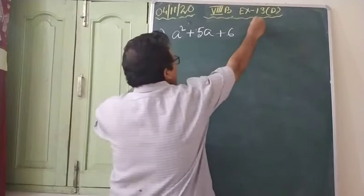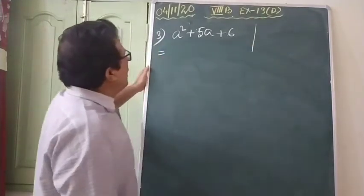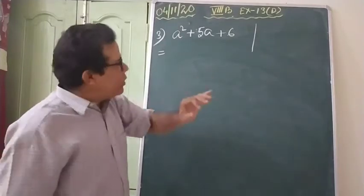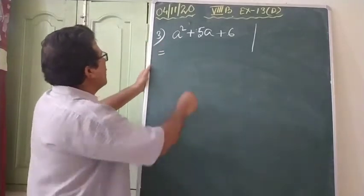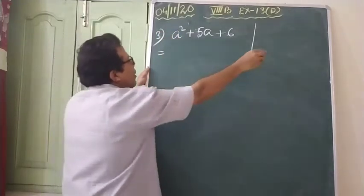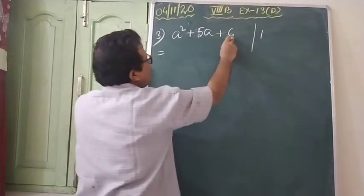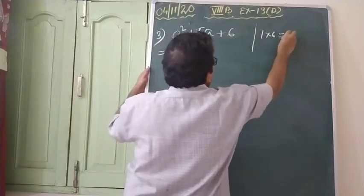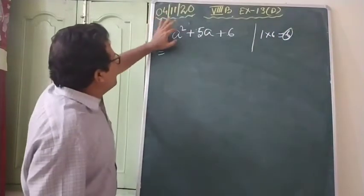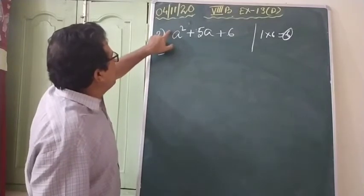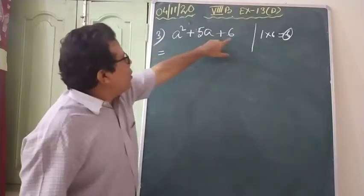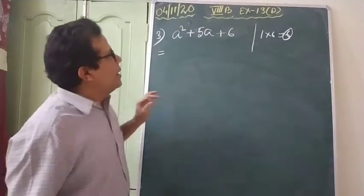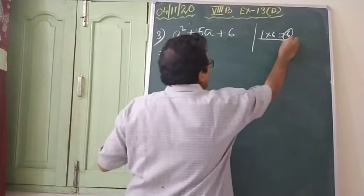Now, how to break the middle term? To break the middle term, you have to write the numerical coefficient of the highest power term. What is the constant? Six. We are supposed to multiply them first. What is coming? Six. So what is the coefficient of a²? One. What is the constant here? Six. Both have to be multiplied, and after multiplying, the result is six.